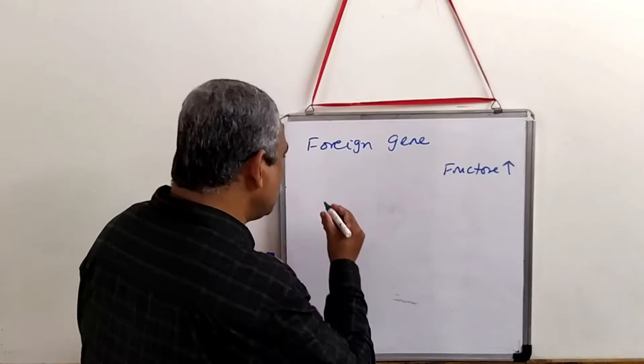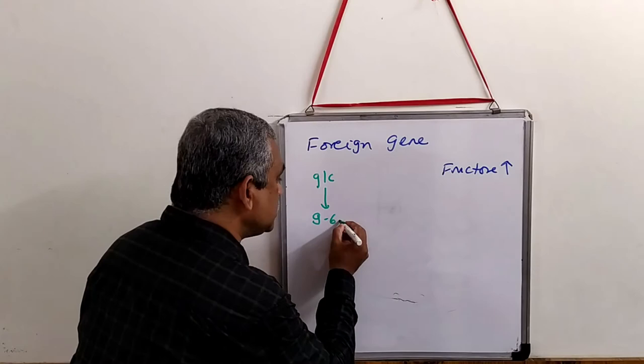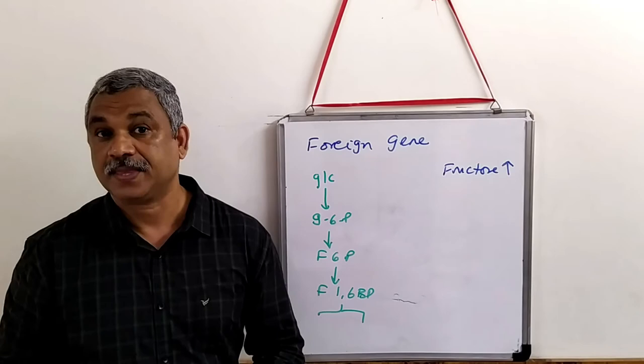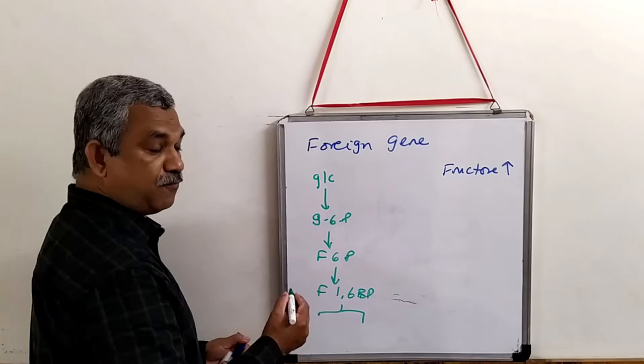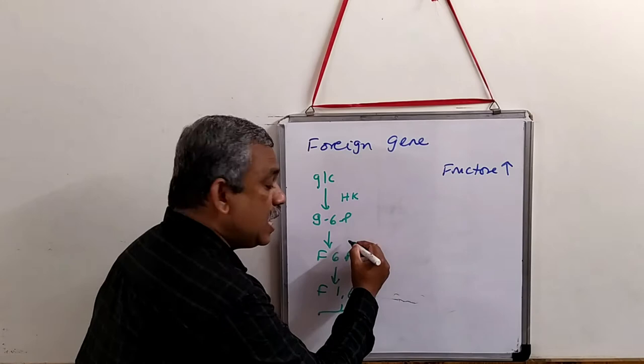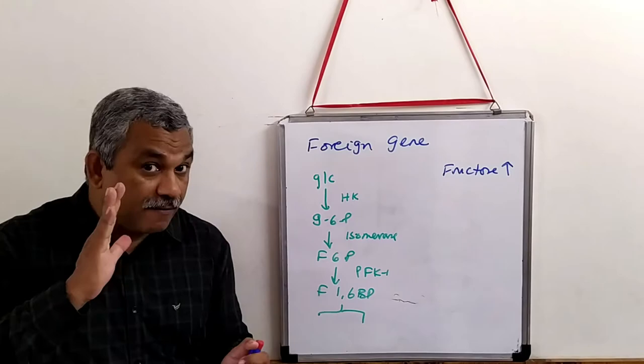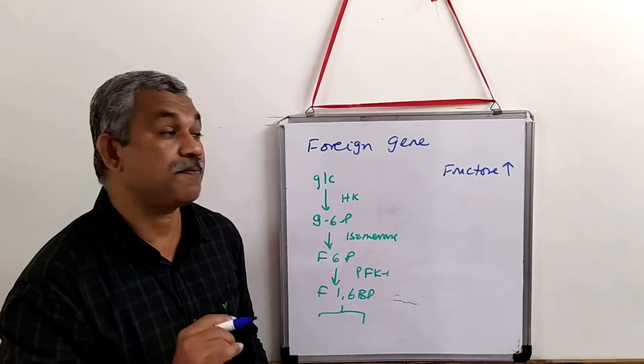If it is glucose, the glucose will be converted to glucose 6-phosphate, then it is converted to fructose 6-phosphate, then fructose 1,6-bisphosphate. Then it is cleaved into the two products, glyceraldehyde 3-phosphate and dihydroxyacetone phosphate. This is an enzyme called hexokinase, this is an enzyme called isomerase enzyme, and this is an enzyme called PFK1. Keep this at the back of our mind in order to understand what happens to fructose.